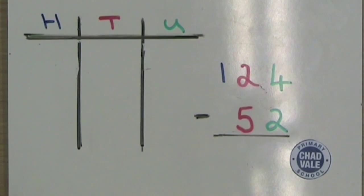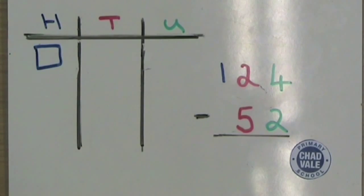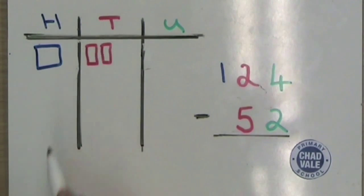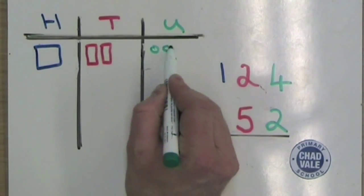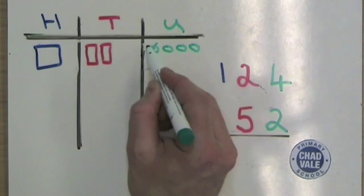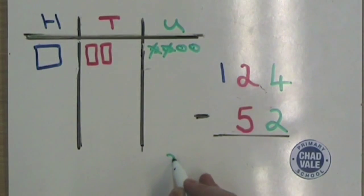Our problem is 124 subtract 52. Firstly we need to draw 124, which has 100, two tens, and four units. We think: four units subtract two units, which we can do quite easily, so we cross them off: one, two. We count how many are left and write them in the units column.